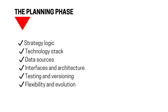We're going to look at a whole host of different sources that go into the trading plan: the information we're looking for from strategy logic, technology stack, data sources, interfaces, architecture, testing and versioning, and flexibility and evolution. But how do you actually put that together into a plan? This is where I introduce my seven-step mental model — the framework you need when starting out on this sort of project.